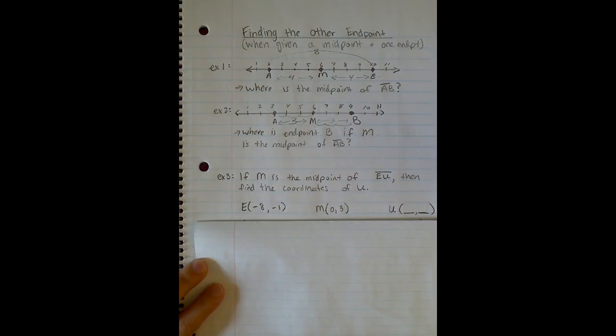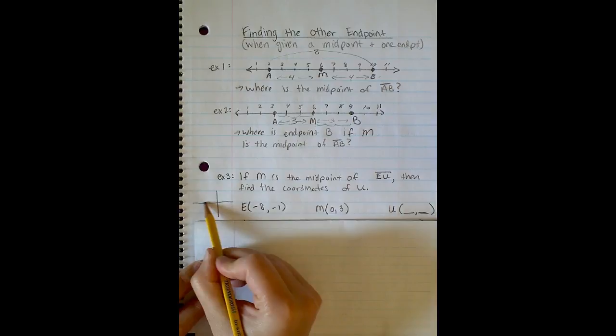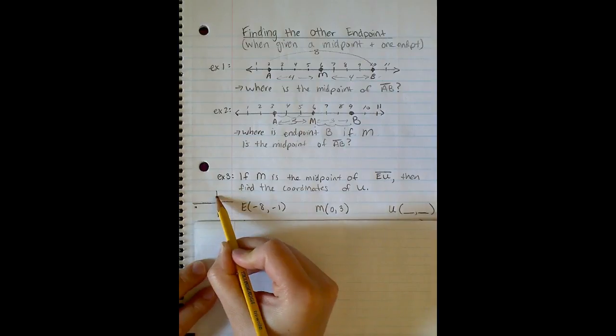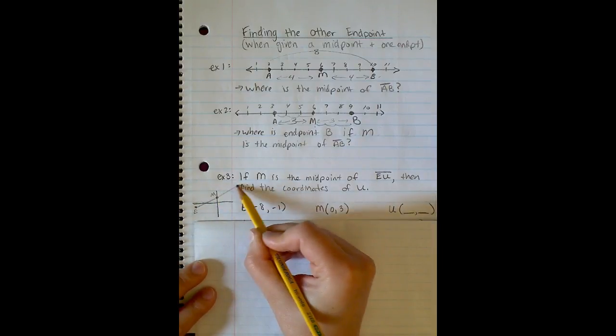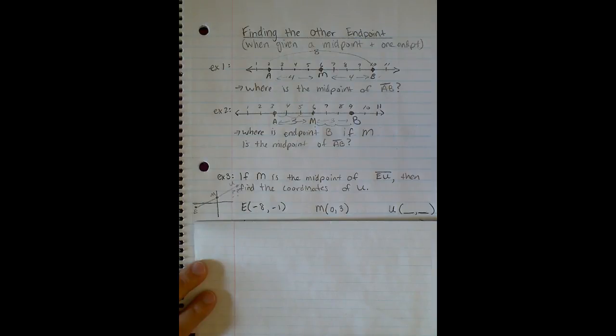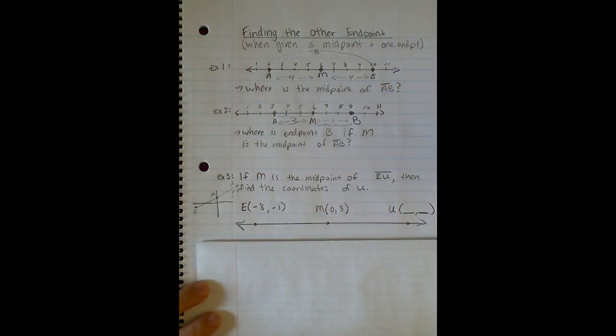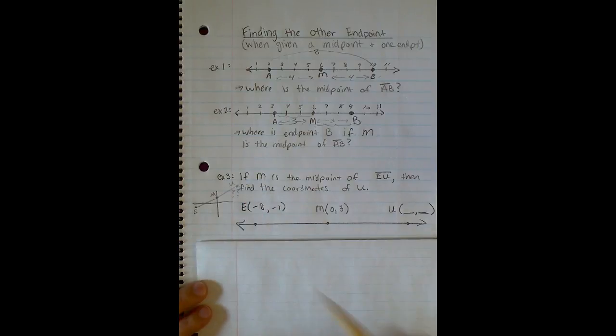If you think about this on the coordinate plane, if we wanted to draw a quick little sketch, negative 8, negative 1 would be somewhere over here. And 0, 3 would be somewhere over here. So E, M. If I were to follow this, U is going to have to be located somewhere up here. So how are we going to figure out the exact coordinates of that point? Well, you can use the same method we did on the first two examples and think of this like a number line instead of on the coordinate plane, which might be a little bit confusing for some of us. So I'm going to look for patterns, just like I did up here.